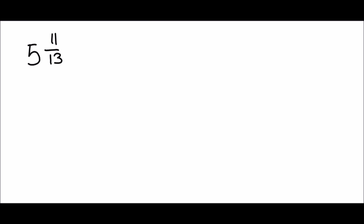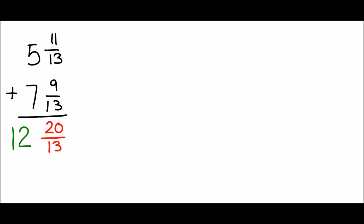Our next example is five and eleven-thirteenths plus seven and nine-thirteenths. We start the same way — add the fractions first: eleven-thirteenths plus nine-thirteenths is twenty-thirteenths. Then add the whole numbers: five plus seven is twelve. Now, twenty-thirteenths is an improper fraction — a fraction bigger than one — so we need to regroup it.